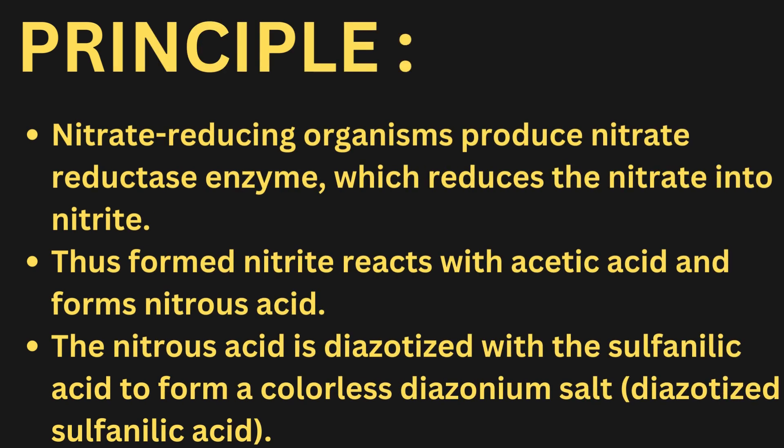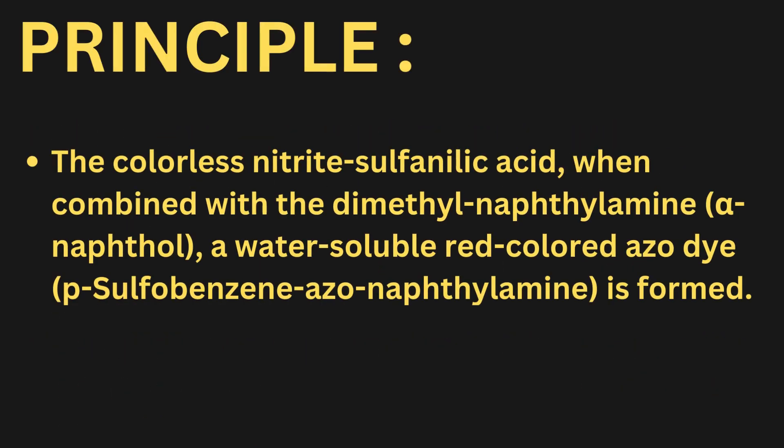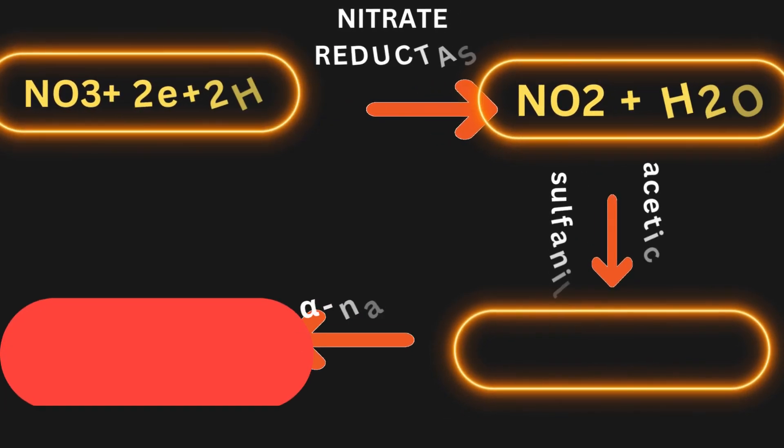Principle: Nitrate-reducing organisms produce nitrate reductase enzyme, which reduces nitrate into nitrite. The nitrite thus formed reacts with acetic acid and forms nitrous acid. The nitrous acid is diazotized with sulfanilic acid to form a colorless diazonium salt — diazotized sulfanilic acid. The colorless diazonium salt, when combined with dimethyl-alpha-naphthylamine, forms a water-soluble red-colored azo dye.